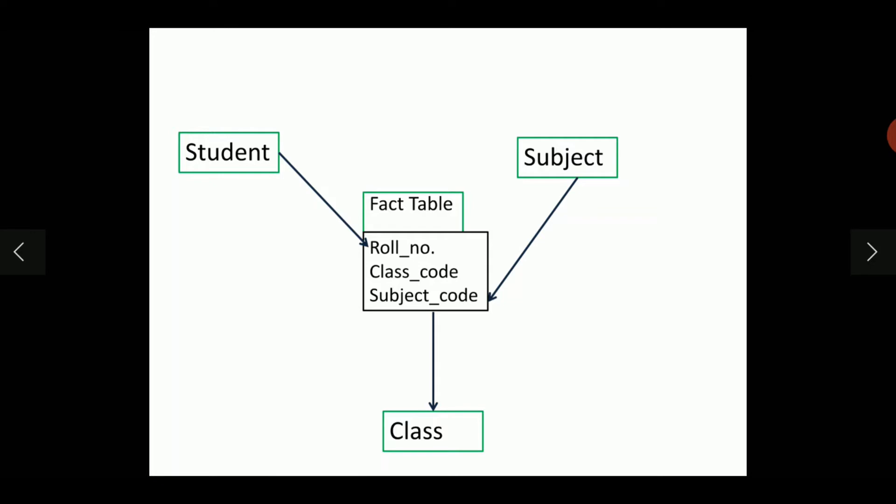A factless fact table is a fact table that does not have any measure or that does not have any fact. We can call it an intersection of simply the dimensions as there are no facts.